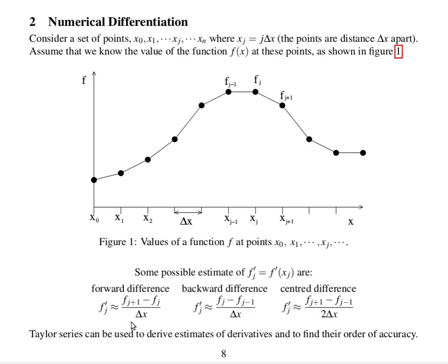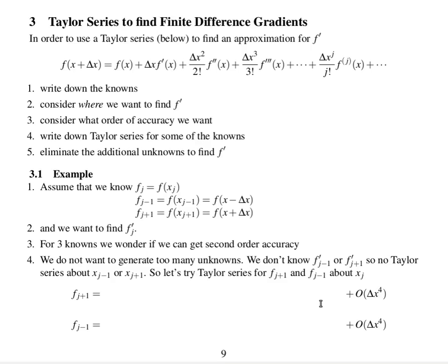We could have found these approximations, rather than by I, we could have found them using a Taylor series, and this would also tell you how accurate they are, which will tell you if any of these would be more accurate or less accurate than any others. So, Taylor series to find finite difference gradients.